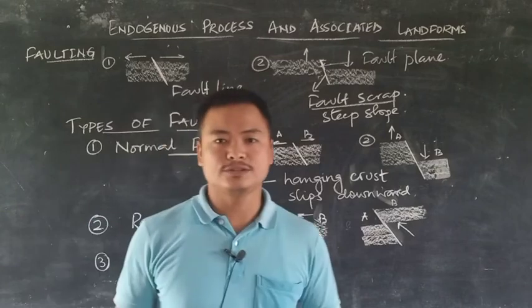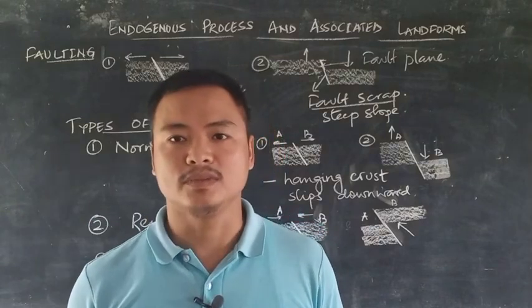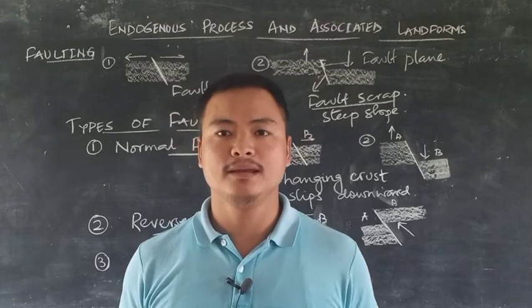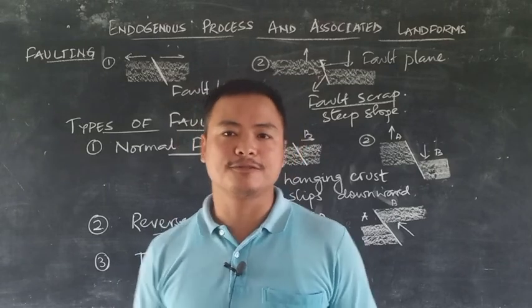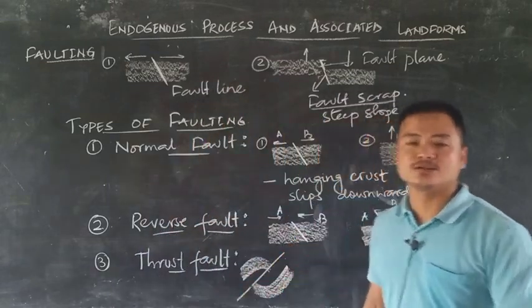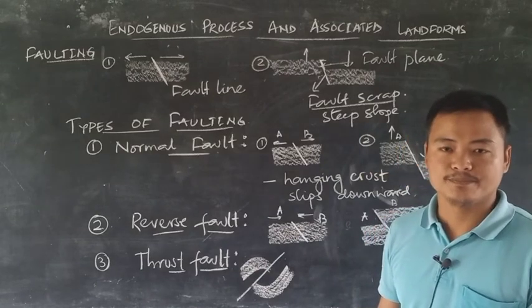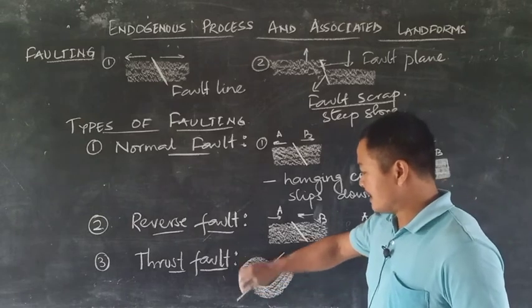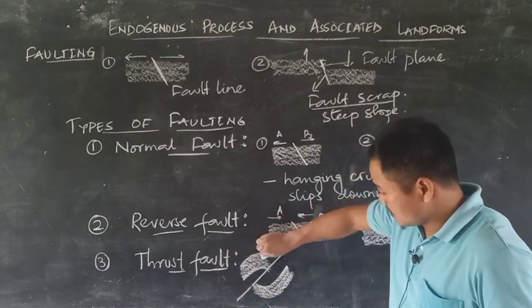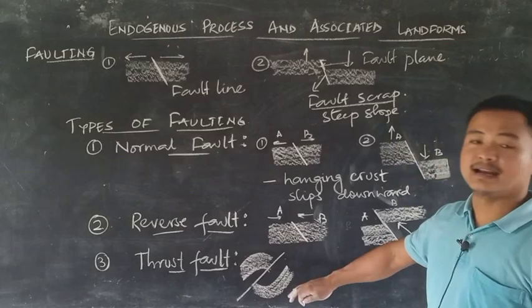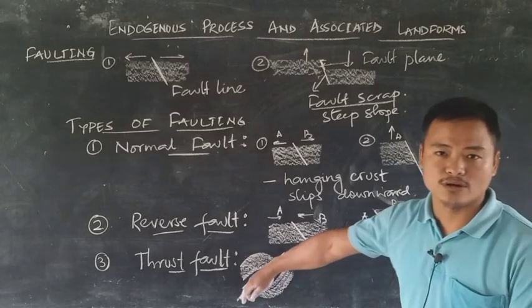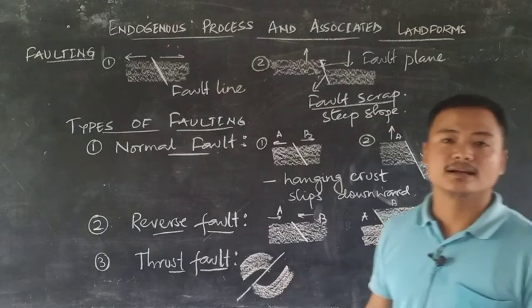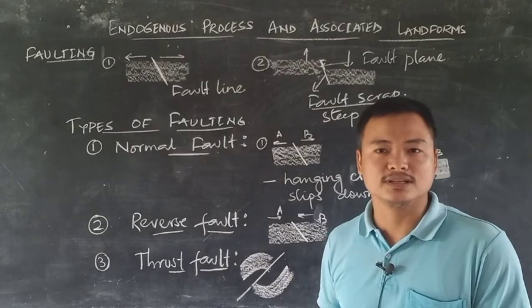The overthrust fault is also a result of compression force. This type of fault is generally associated with the folding of rock structures. It forms when one block of the earth's crust overrides another block due to the fault that has occurred — and it is usually associated with folds.